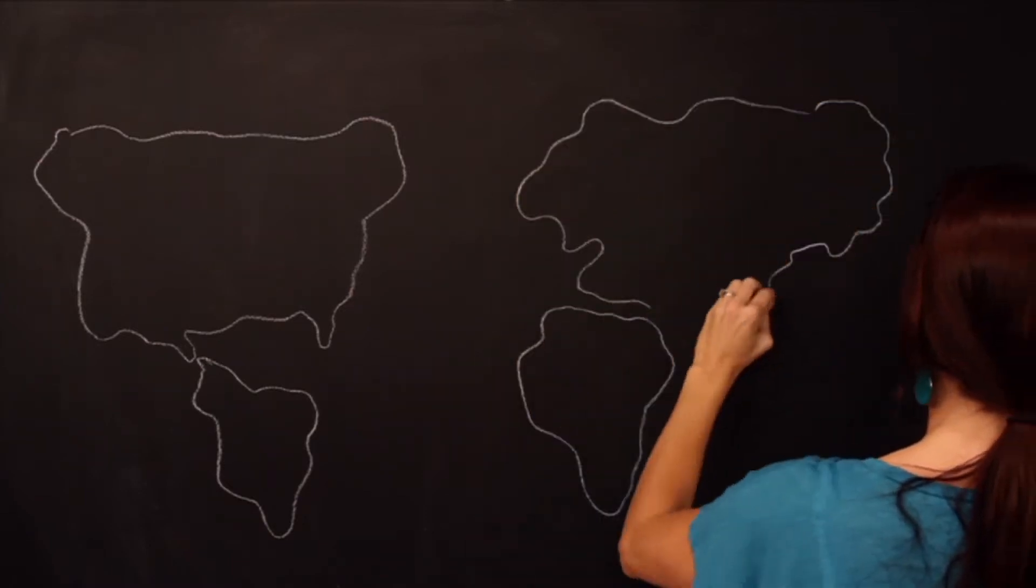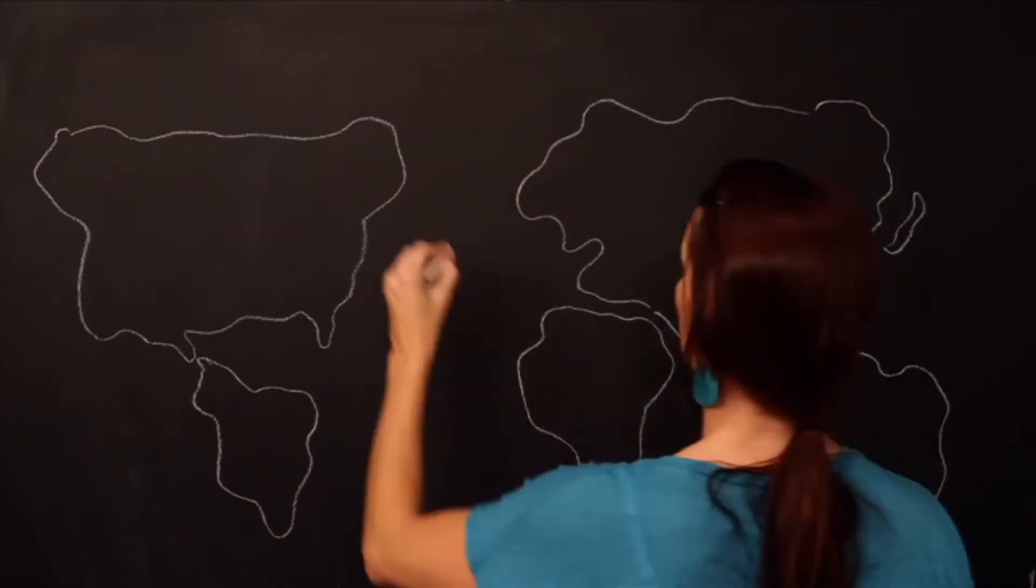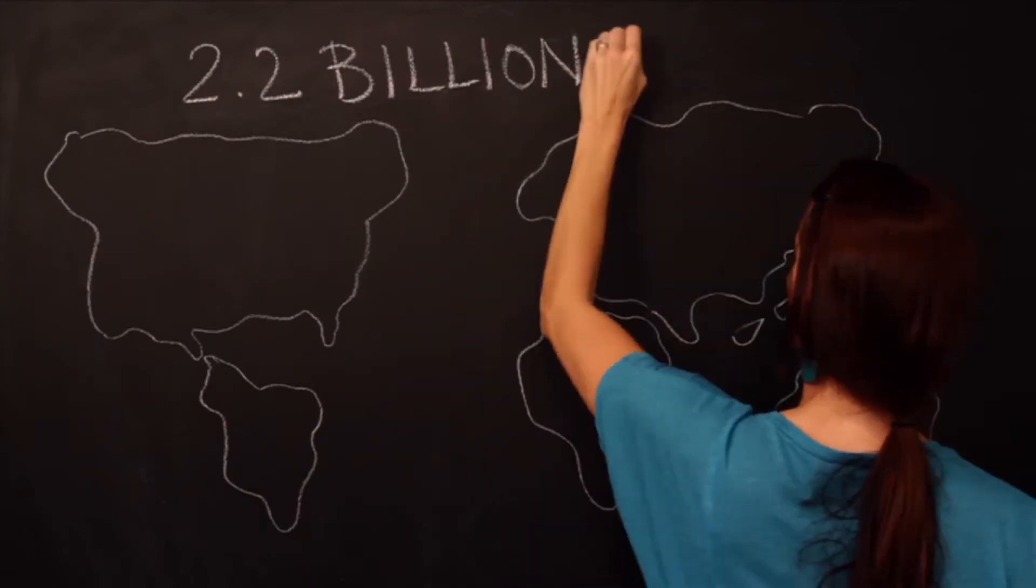To know where this world is headed, we must look at the next generation. There are 2.2 billion children. Many are facing some of the world's worst problems.